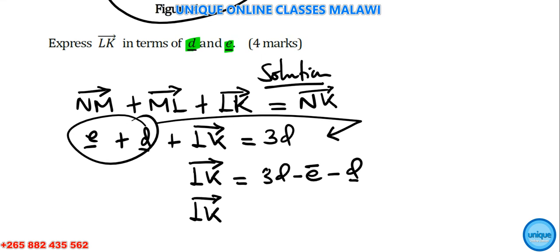We have LK is equal to 3d minus e minus d. We're going to have 2d, so LK = 2d - e. That's the solution which was needed. This is how you can do it. Let's move on to another question.